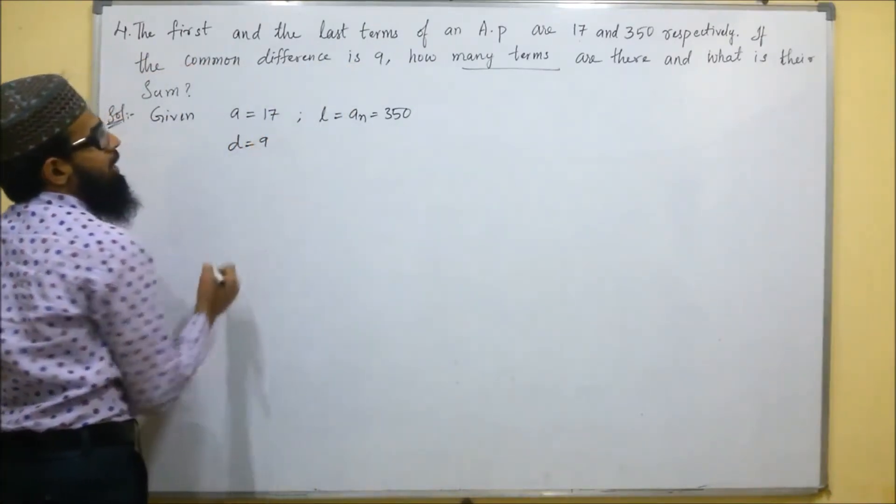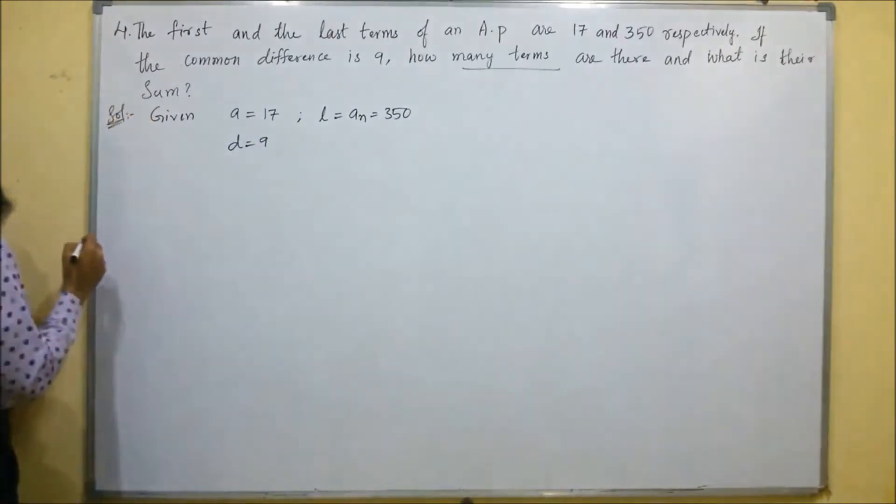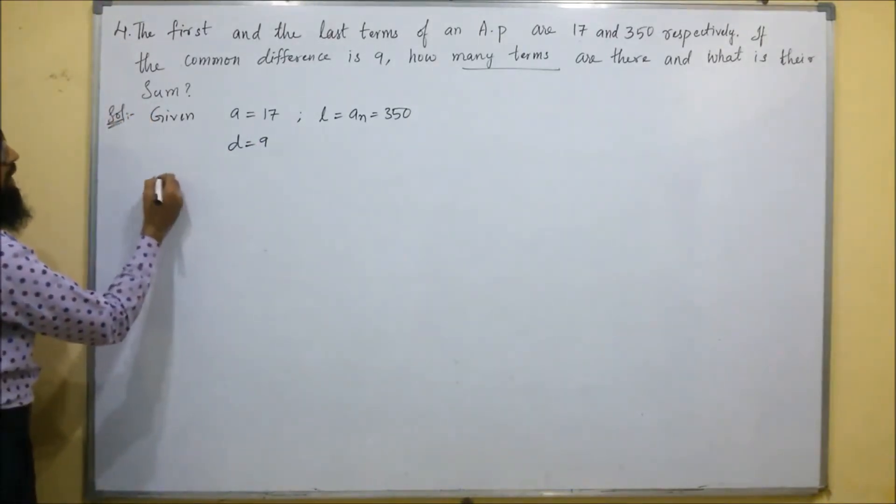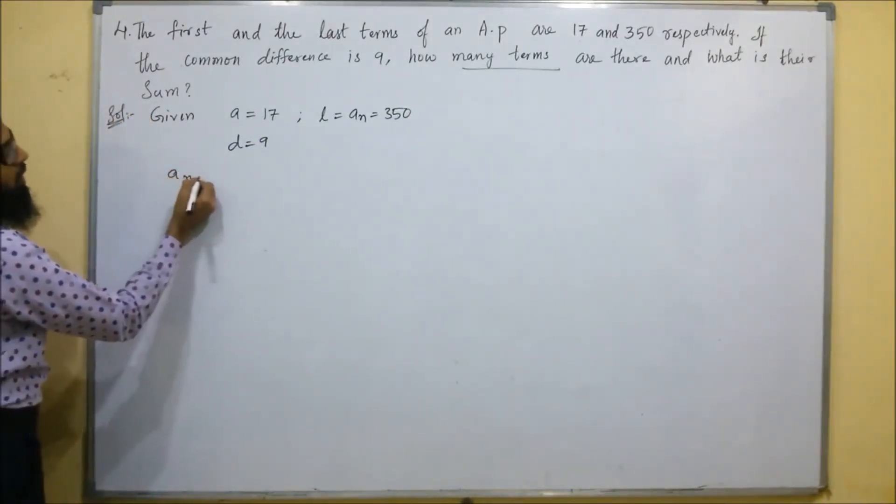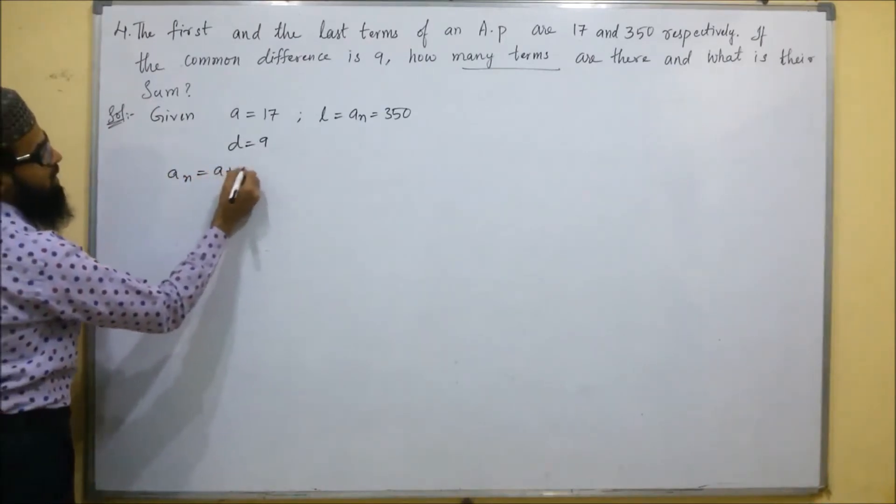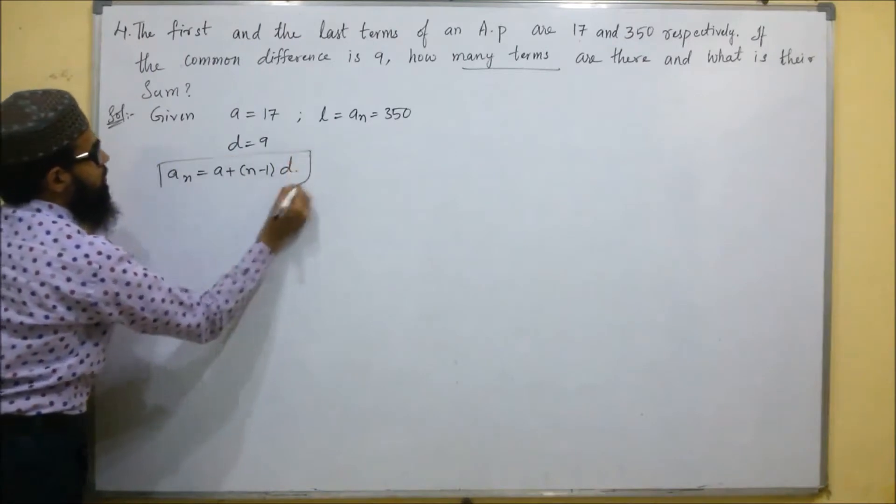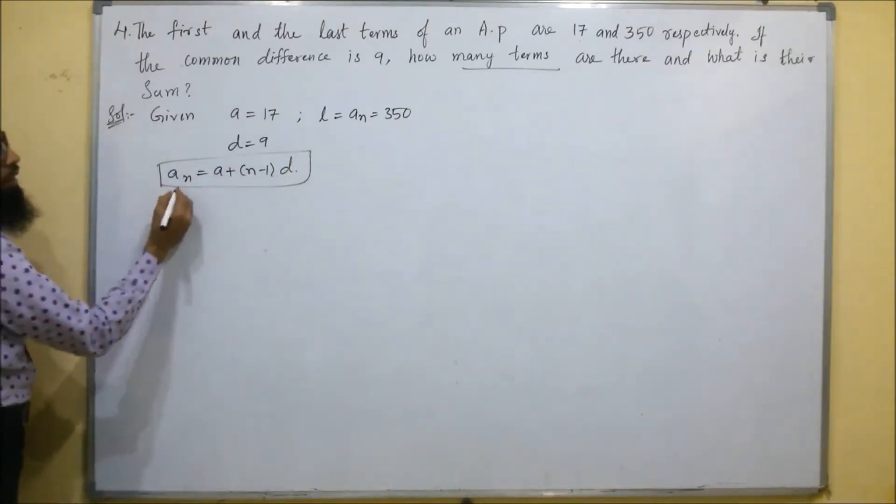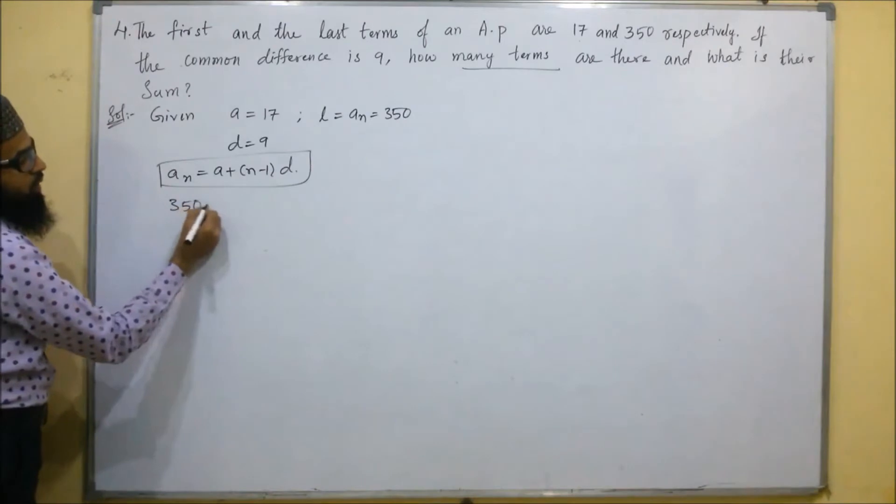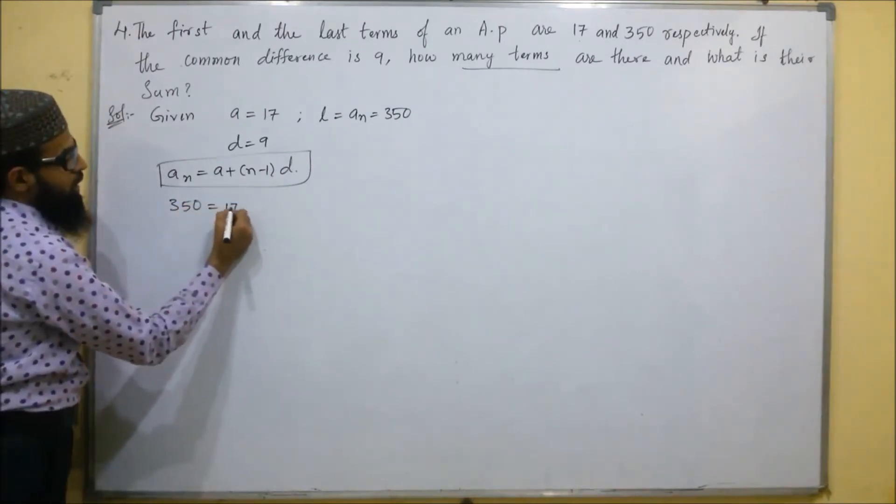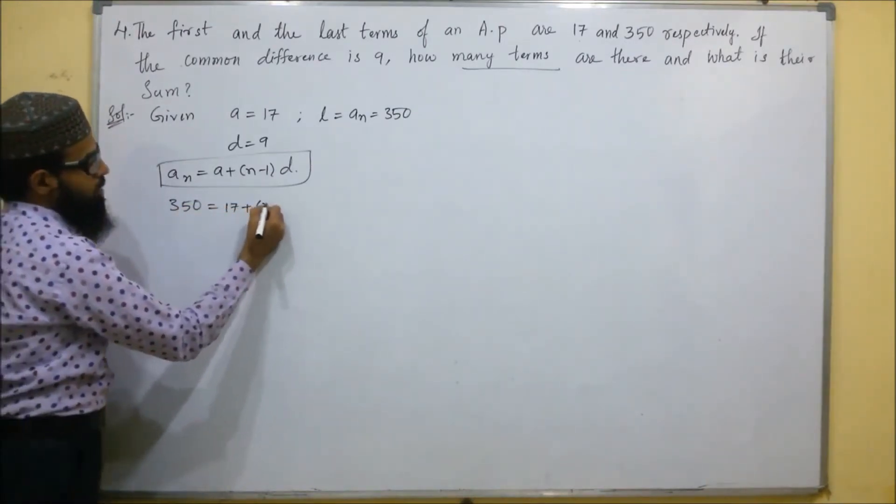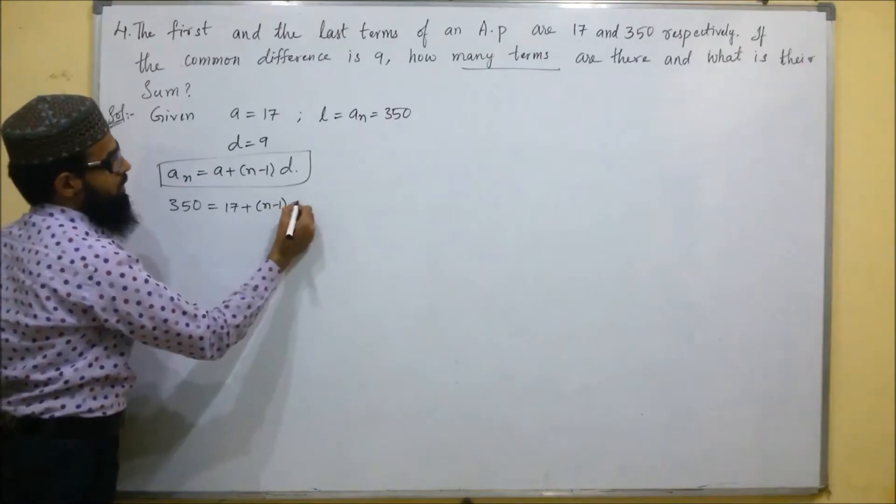So, D equals 9. How many terms are there we have to find? We know the general formula, the nth term. Nth term formula is AN equals A plus N minus 1 into D. We will use the formula for finding the number of terms. AN is 350 equals A is 17 plus N minus 1, D is 9.